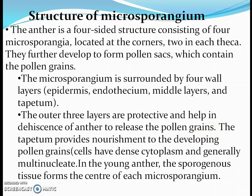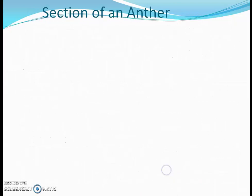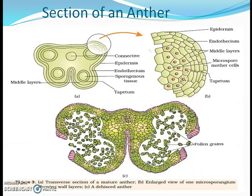The outer three layers are protective and help in the dehiscence of the anther to release the pollen grains when they are mature. The tapetum provides nourishment to the developing pollen grains. Tapetum cells have dense cytoplasm and are generally multi-nucleate. In the young anther, the sporogenous tissue forms the center of each microsporangium. Looking at the section of the anther, the layers are: epidermis, endothecium, middle layer, and tapetum.